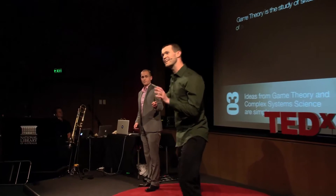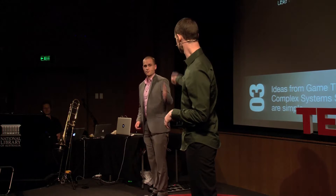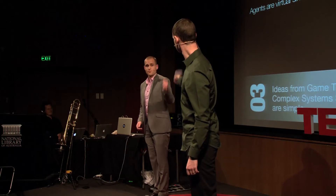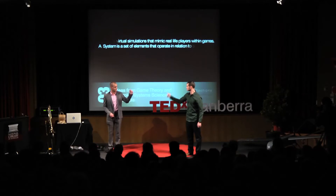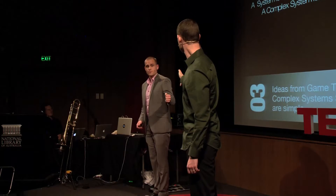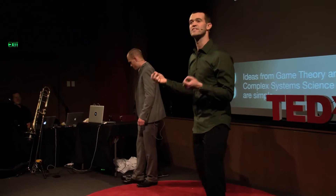Let's start with some terms. Game theory is the study of situations where the success of one person's choices depends on the choices of others. Cooperation and defection are strategies that players can use to maximise payoffs for themselves. Payoffs are the rewards or punishments following the actions of all players. Agents are virtual simulations that mimic the behaviour of real-life players within games. A system is a set of elements that operate in relation to one another. A complex system is a system with elements interacting to create an outcome that is more intricate or elaborate than the sum of its parts.